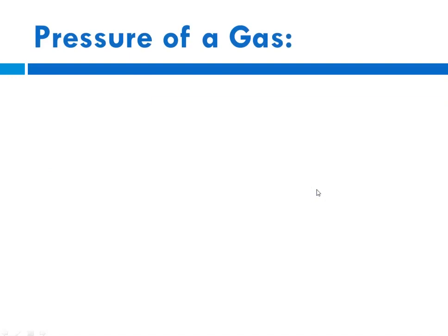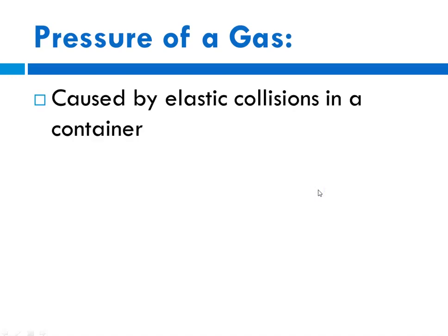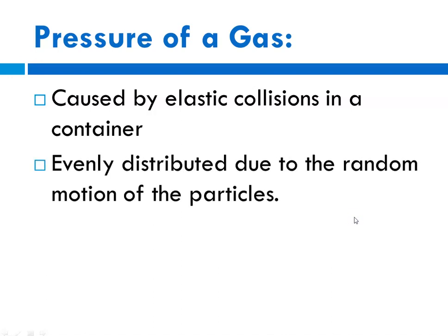So when we talk about gases, one of the first things we discuss is the pressure of a gas, and that's caused by the collisions in the container. And that container might be our atmosphere, or it might be a small bottle, for instance. So because the particles of a gas move randomly, the pressure, as a result, is evenly distributed. And pressure is defined as force per unit area.